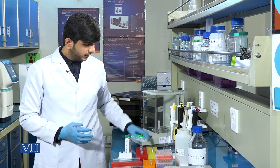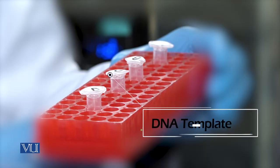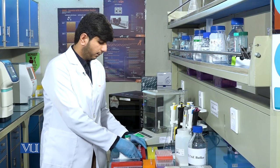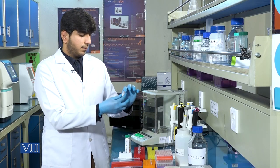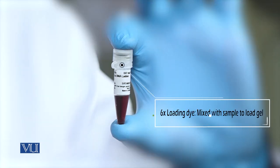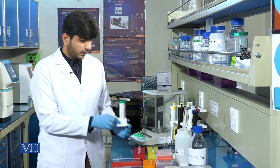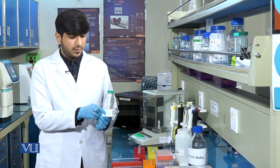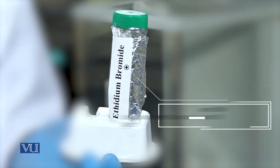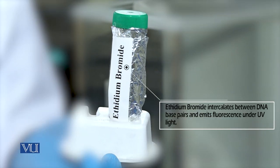For the agarose gel electrophoresis, we need DNA template, 6x loading dye which is Bromophenol blue, and ethidium bromide, which is a fluorescent dye used to visualize the DNA under UV light.